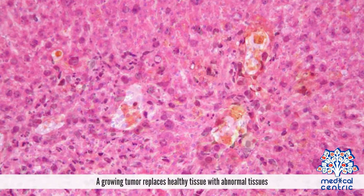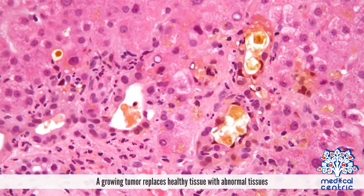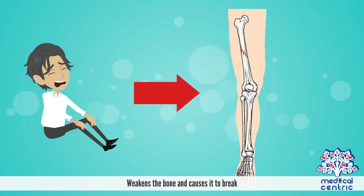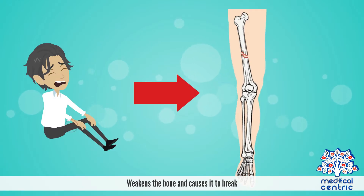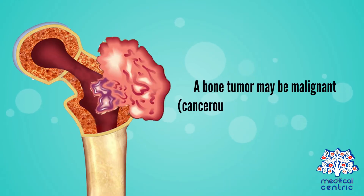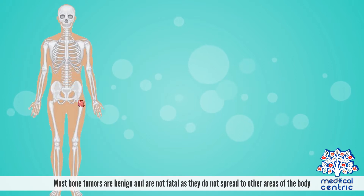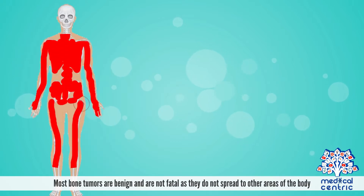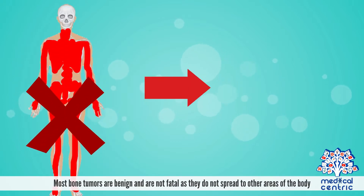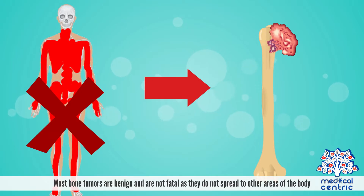A growing tumor replaces healthy tissue with abnormal tissue, weakens the bone, and causes it to break. A bone tumor may be malignant, as in cancerous, or benign, as in non-cancerous. Most bone tumors are benign and are not fatal, as they do not spread to other areas of the body.